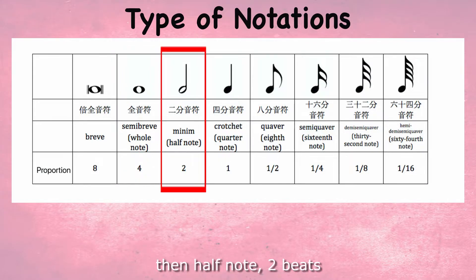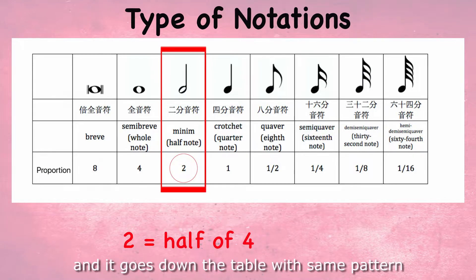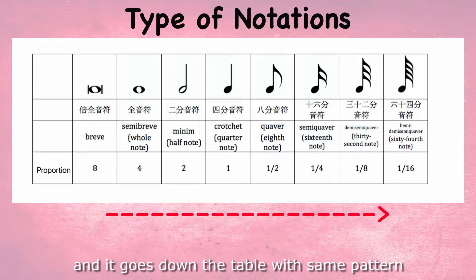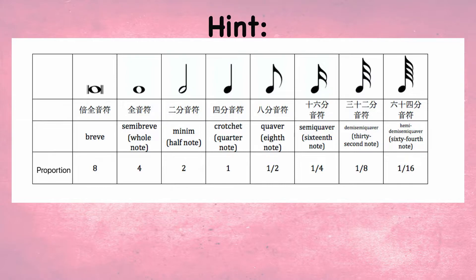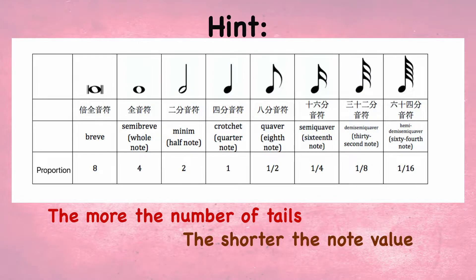Then the half note — 2 beats, half of 4. And it goes down the table with the same pattern. Hint: the more the number of tails, the shorter the value of the note.